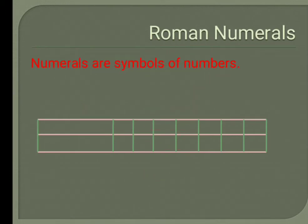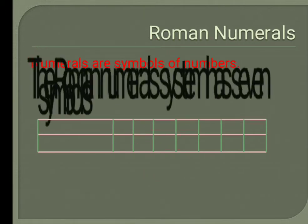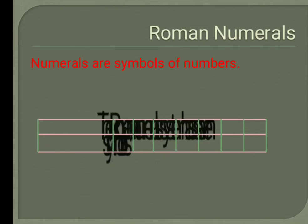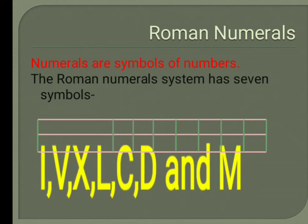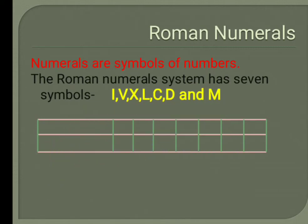Numerals are symbols of numbers. The Roman numerals system has 7 symbols: I, V, X, L, C, D, and M.